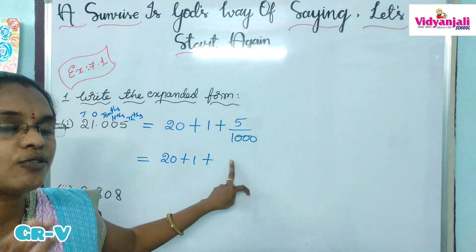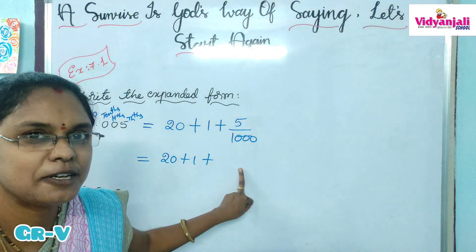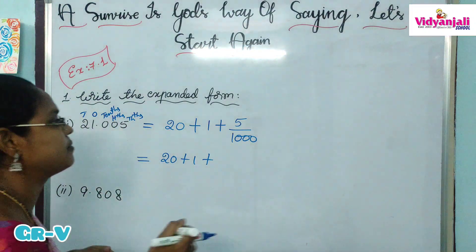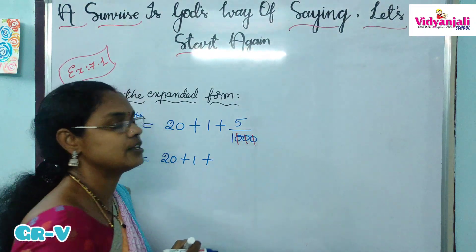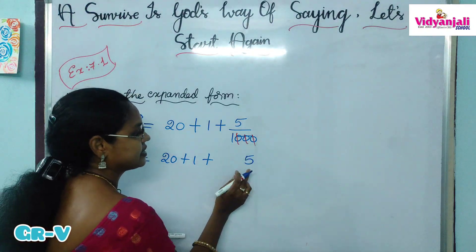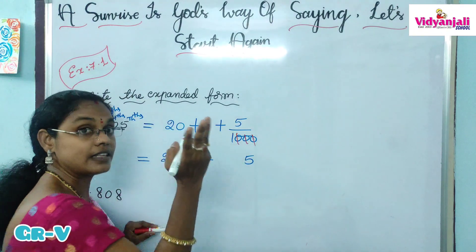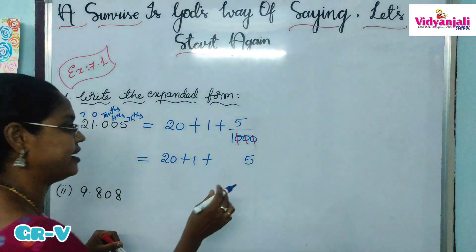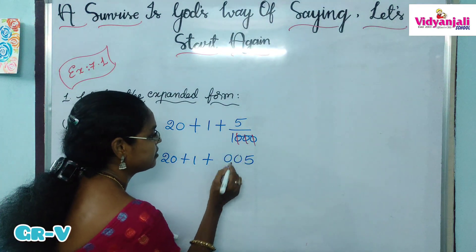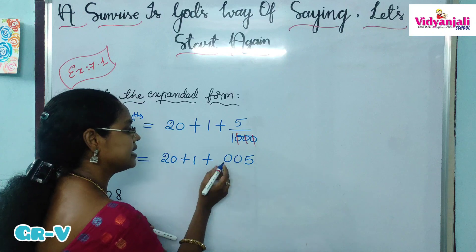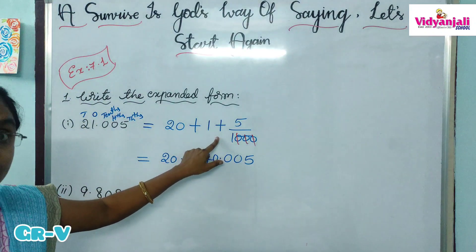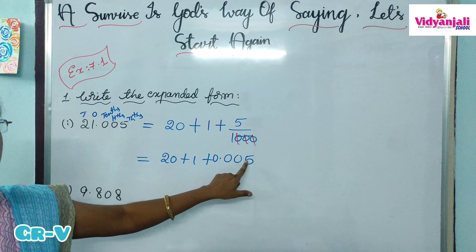Now 5 by 1000 — how to convert a fraction to a decimal? We have to count the number of zeros. How many zeros are there? 1, 2, 3 zeros. So where must we keep the point? As we have 3 zeros, we need 3 digits before the point. We only have 1 digit, so take 2 zeros as helpers. Count 1, 2, 3 digits before the point. So 5 by 1000 means 0.005.